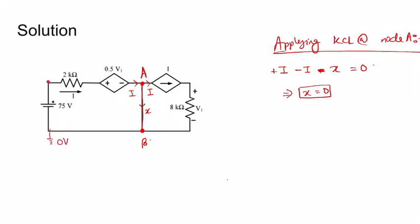Also, if this is zero volts, then this is 75 volts. So V at B is zero volts. Now if this is a loop...